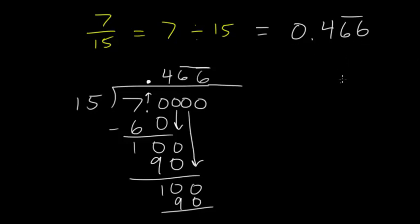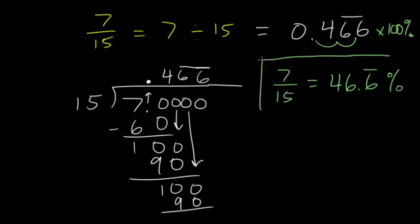Now we just need to make it a percentage. So we multiply by 100%. And so the decimal will move twice there. You get 46.6. The 6 is still repeating. And that's percent. So the fraction 7 fifteenths is simply equal to 46.6 repeating percent.